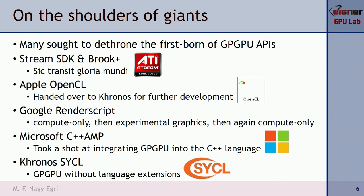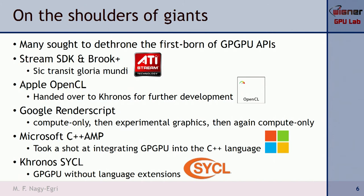Apple introduced OpenCL, which the industry liked so much that they handed the API over to Khronos for further handling. Although the trademark is still Apple's, it is now an open standard managed by Khronos. Google tried something called RenderScript, which also didn't gain much traction. It's part of the Android SDK and is what you should use for compute on Android — it went from compute-only, to some graphics, and then back to compute.